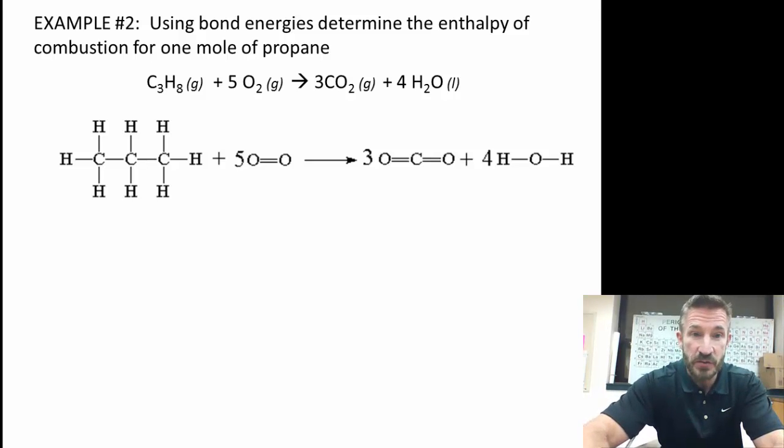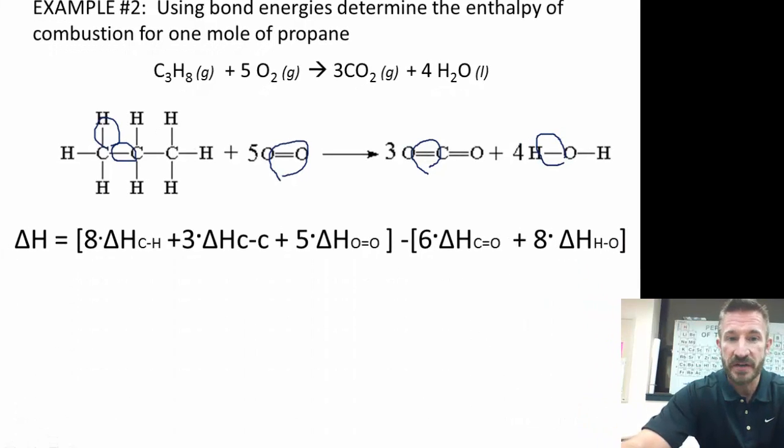Let's do this problem. So we're going to do products minus reactants. We're going to break actually three different types of bonds. We're going to break a carbon-hydrogen bond, a carbon-carbon bond, and an oxygen-oxygen bond. And we're going to form two types of bonds. We'll form a double carbon-oxygen bond, actually six of those. And we're also going to form eight oxygen-hydrogen bonds. So that's the way the setup's going to look for this.